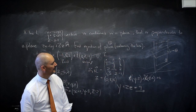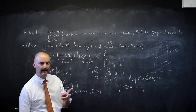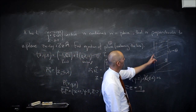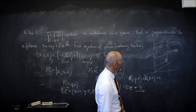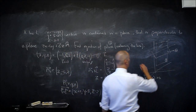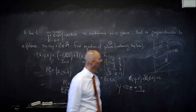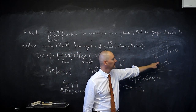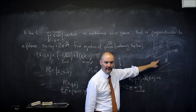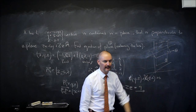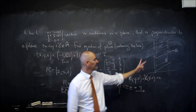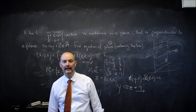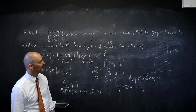Beautiful problem. Remember: the cross product of two vectors gives a resultant vector perpendicular to both. All I needed were two vectors parallel to plane 2 — one from the line direction, and one from the normal to plane 1. Because the two planes are perpendicular, the normal to plane 1 is parallel to plane 2. Their cross product is then perpendicular to plane 2, giving us the normal to plane 2.